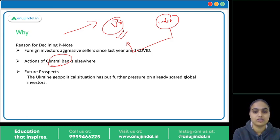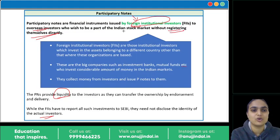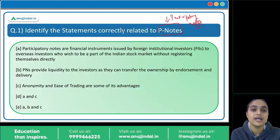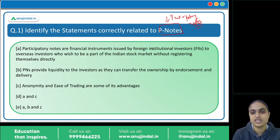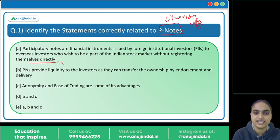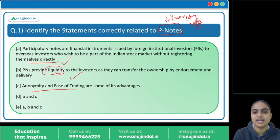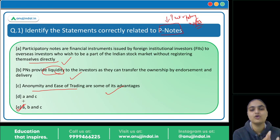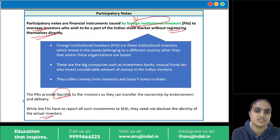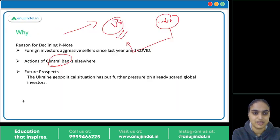That was all about P-Notes. Coming back to the question, we need to verify the correct statements. First: P-Notes are financial instruments issued by FIIs to overseas investors without the need to register directly in India — correct. Second: P-Notes provide liquidity to investors — correct. Third: anonymity and ease of trading are some of their advantages — correct. All three statements are correct, so the answer is option E. I hope you have clearly understood this concept of participatory notes — it is an important concept you should know.